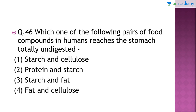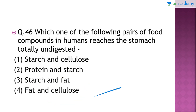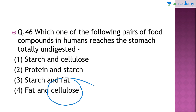Question number 46: which pair of food compounds in humans reaches the stomach totally undigested? The right answer is option number four. Cellulose is never digested in the human body — it is only digested in grazing animals like cows and goats, which have bacteria in their alimentary canal that produce enzymes to break the beta-1,4 glycosidic bonds present in cellulose. In our body, amylase breaks alpha-1,4 glycosidic bonds in starch but cannot break the beta-1,4 bonds in cellulose.